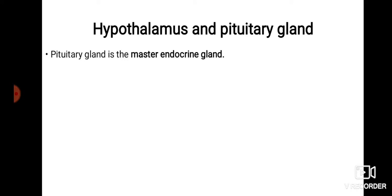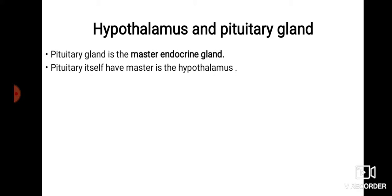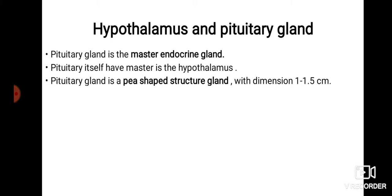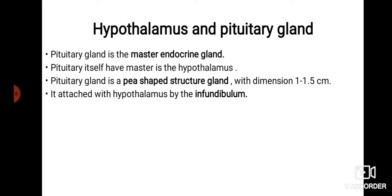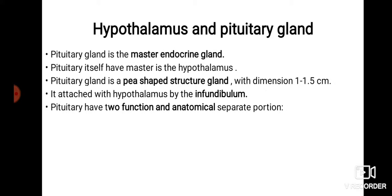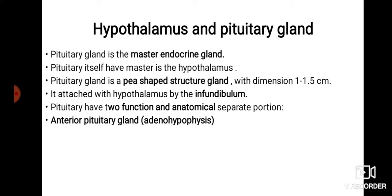The hypothalamus and pituitary gland: the pituitary is the master gland of the endocrine system, and the hypothalamus is itself the master of the pituitary. The pituitary gland is a pea-shaped structure with dimensions of 1 to 1.5 centimeters. It attaches to the hypothalamus through the infundibulum.